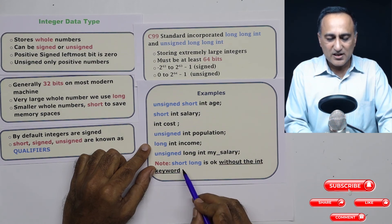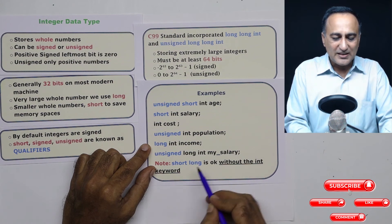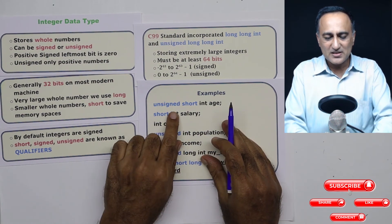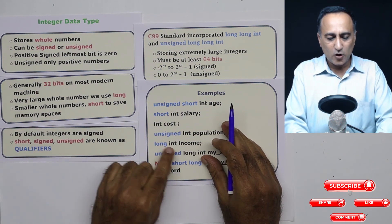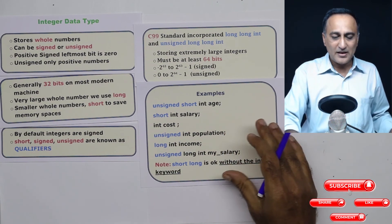Now you need to understand these words like short, long can just be used without using the int keyword along with it. So instead of saying short int salary I could have simply said short salary. So instead of saying long int income I could have simply said long income. That's what it really means.